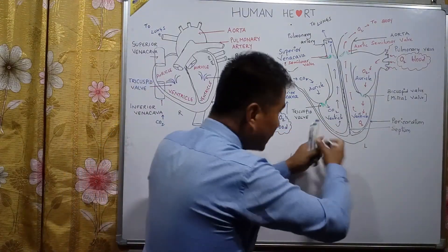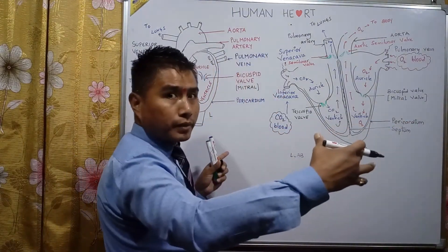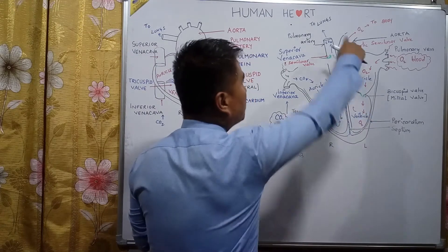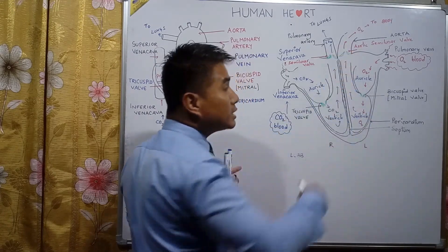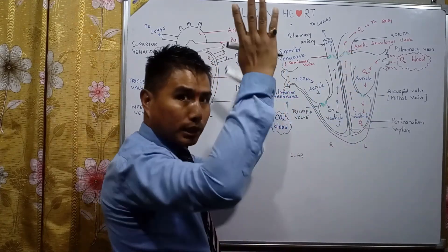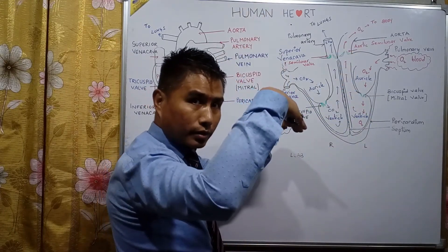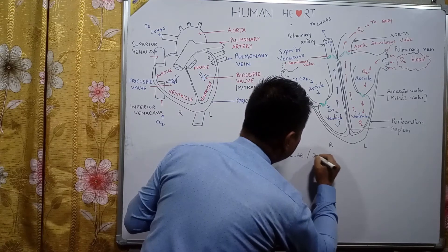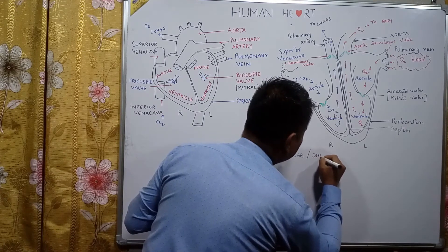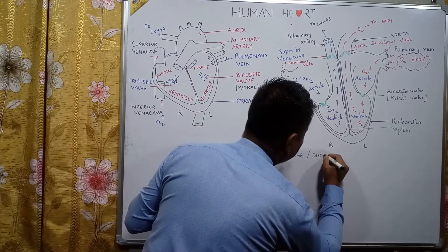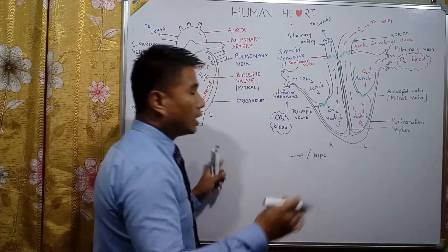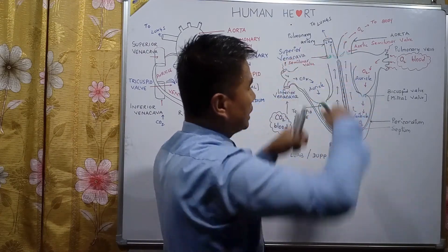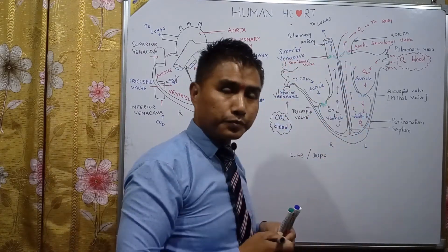When the ventricle expands, the tricuspid and bicuspid valves open but the semi-lunar valves close, producing a sound known as 'dub'. So the heartbeat sound is lub-dub.